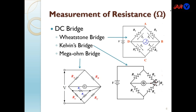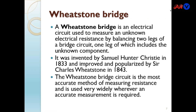The first type of bridge is the DC bridge, which is used for measurement of resistance. We will study three types of DC bridges: the Wheatstone bridge, Kelvin's bridge, and the Mega Ohm bridge. In the Wheatstone bridge circuit, the DC voltage source is applied at terminals A and C, and the current detector circuit is connected at D and B. These are only DC bridges used to measure resistance.